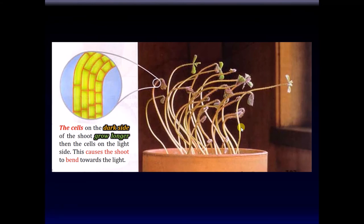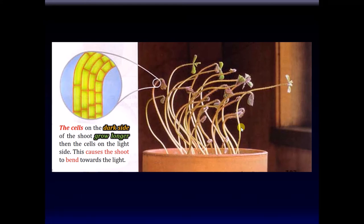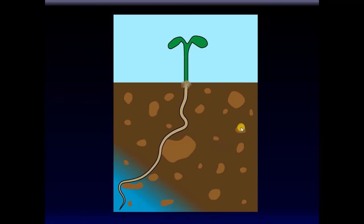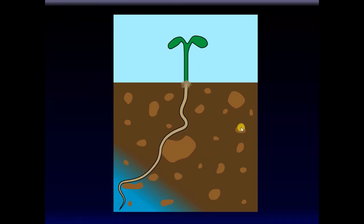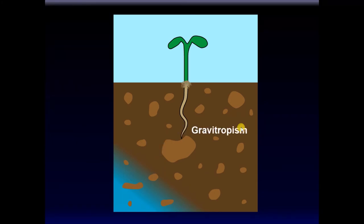The cells on the dark side of the shoot grow longer than the cells on the light side, causing the shoot to bend towards the light, and the plant continues to grow towards the light. There are other types of tropism as well: gravitropism is growth of the roots towards the earth, towards gravity. Thigmotropism plays a role in how roots grow and how they avoid rocks. Roots also tend to go towards a water source — that's called hydrotropism. So in this diagram there are three examples of tropism: gravitropism, thigmotropism, and hydrotropism.